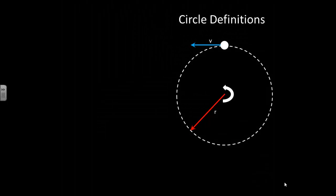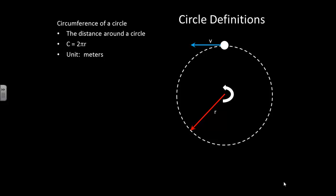To talk about circular motion, we must start with some simple definitions. First, the circumference of a circle is the distance around a circle and is equal to 2πr. The units we will use are meters.